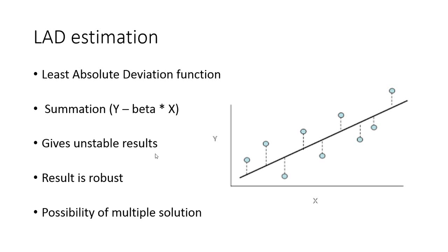That is how we find out the least absolute deviation, and we get a different type of regression line than that of an ordinary least square regression line. This type of estimation gives unstable results, which is of course a demerit, but the result is more robust compared to ordinary least square regression. Many times when there are outliers in a dataset, least absolute deviation regression works better than ordinary least square regression.